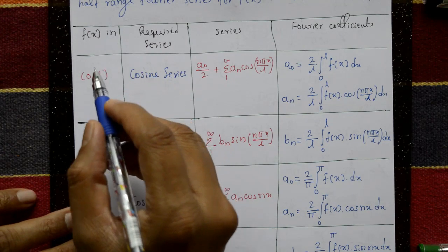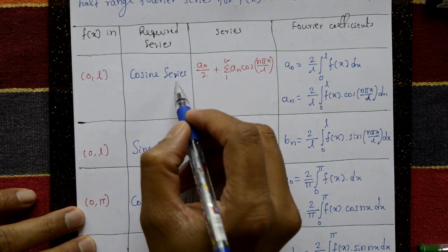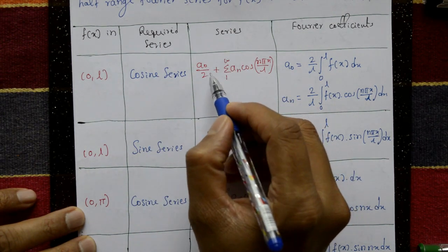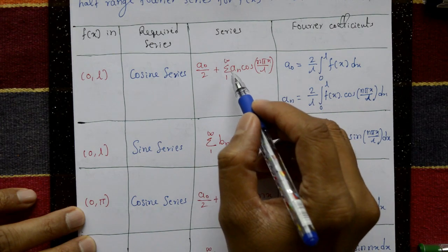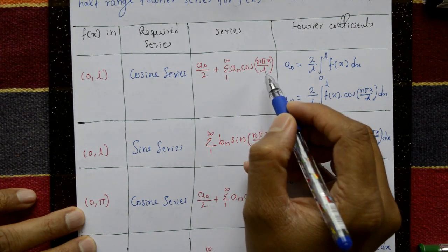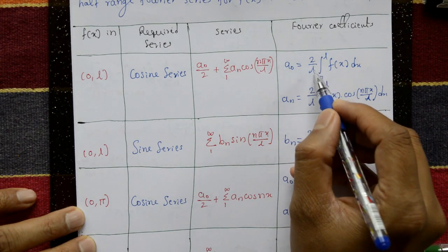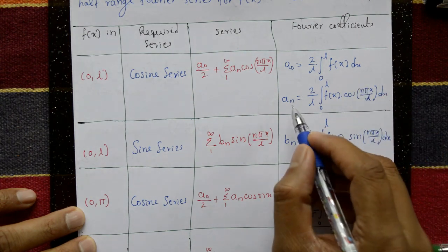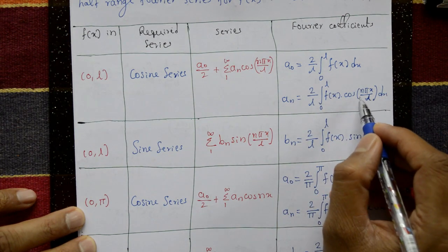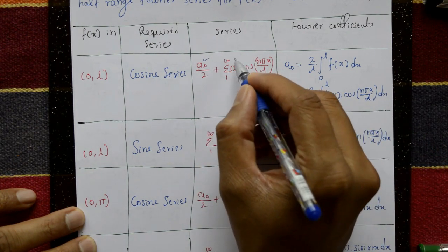When the interval of f(x) is 0 to l and the required series is a cosine series, then f(x) equals a₀/2 plus the summation from 1 to infinity of aₙ cos(nπx/l). The coefficients are: a₀ = (2/l) ∫₀ˡ f(x) dx, and aₙ = (2/l) ∫₀ˡ f(x) cos(nπx/l) dx. Only a₀ and aₙ are required.